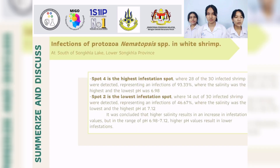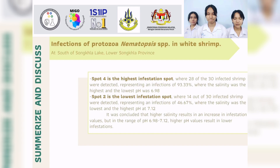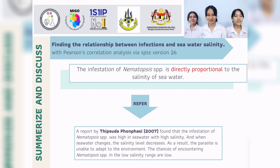Summary: Spot 4 is the highest infestation spot, representing an infection of 93.33%, where the salinity was the highest and the lowest pH at 6.98. Spot 2 is the lowest infestation spot, representing an infection of 46.67%, where the salinity was the lowest and the highest pH is 7.12. It was concluded that higher salinity results in an increase in infestation, but in the pH range of 6.98 to 7.12, higher pH values result in lower infestation. The relationship between infection and seawater salinity is directly proportional.